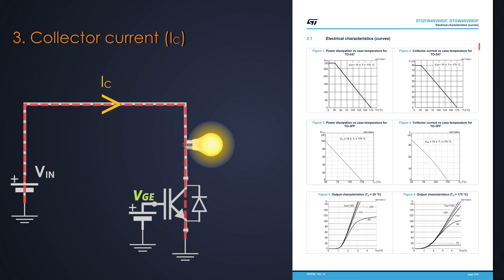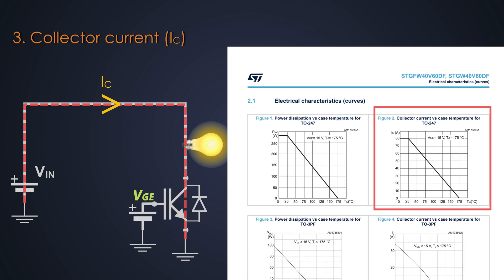Let's see the collector current versus junction temperature graph. When the junction temperature of the IGBT increases, the current handling capacity of the IGBT decreases. And eventually it goes to 0 at 175 degrees Celsius, even if we give this sufficient gate voltage which is around 15 volts.